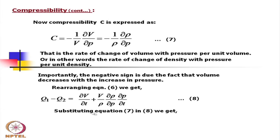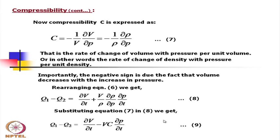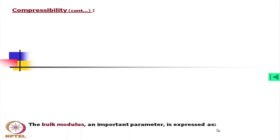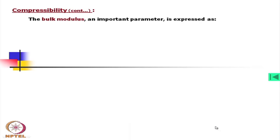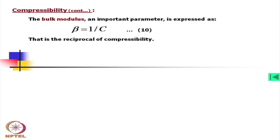The bulk modulus β is an important parameter and is expressed as β = 1/C — the reciprocal of compressibility. The unit of bulk modulus is Pascal, same as modulus of elasticity. Compressibility is the fractional reduction in volume of a fluid for unit increase in applied pressure.